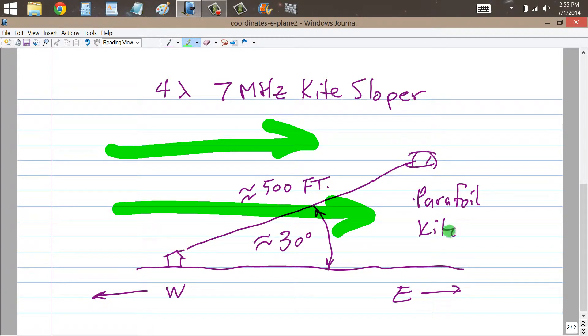That was a parafoil kite right there, a kite sloper antenna with a separate tether, 500 feet long. I remember the length of that wire because it was four wavelengths at seven megahertz, and that thing was flying out towards the east at an angle of about 30 degrees with respect to the horizon. Parafoil kites can fly in pretty brisk winds. The wind was probably around 20 miles an hour, which is a good speed for a small parafoil kite.